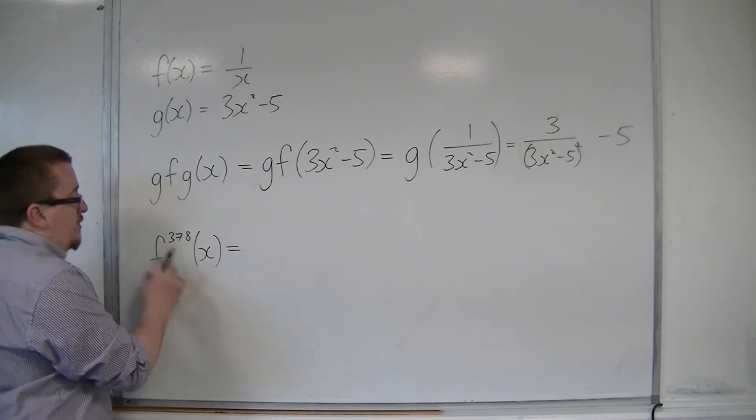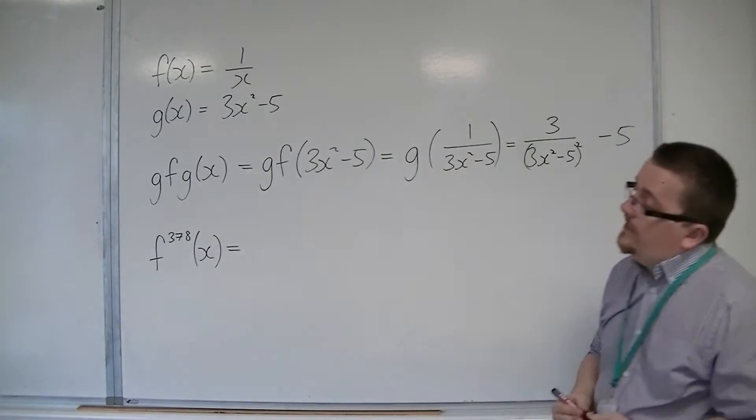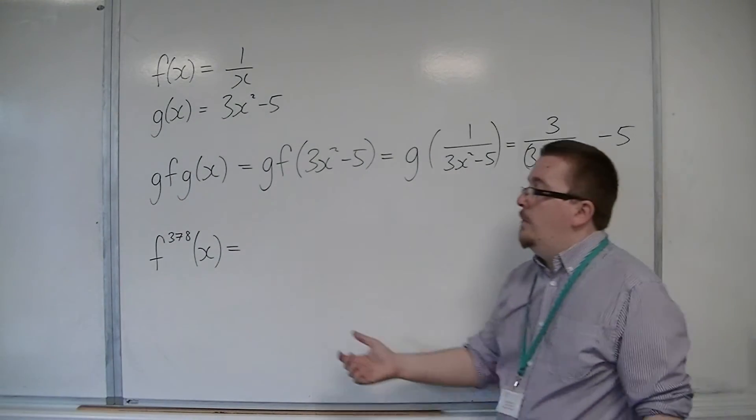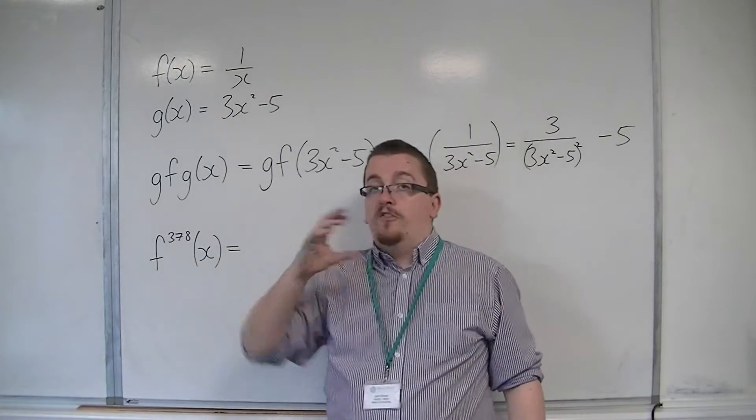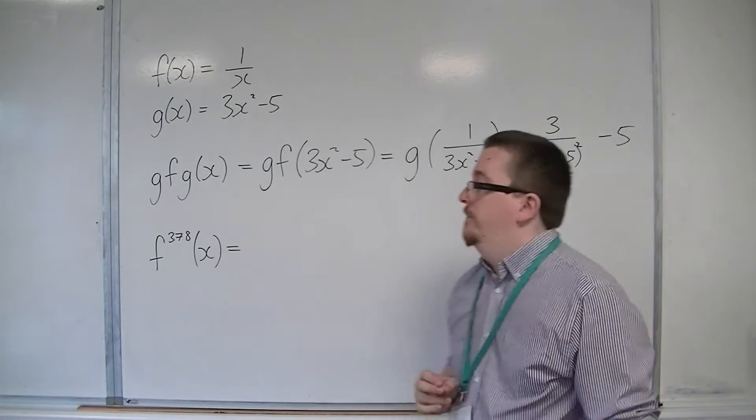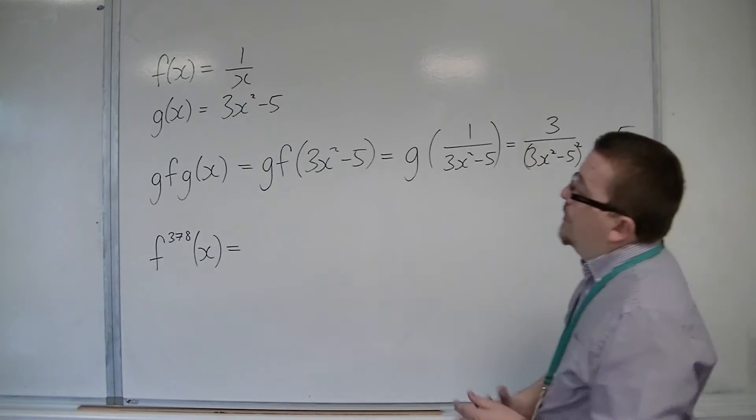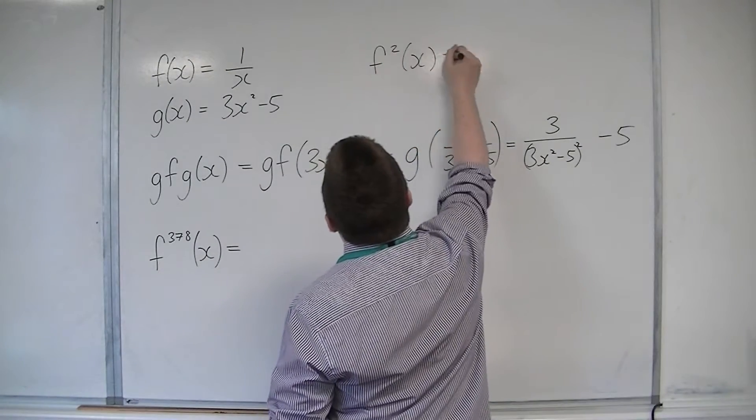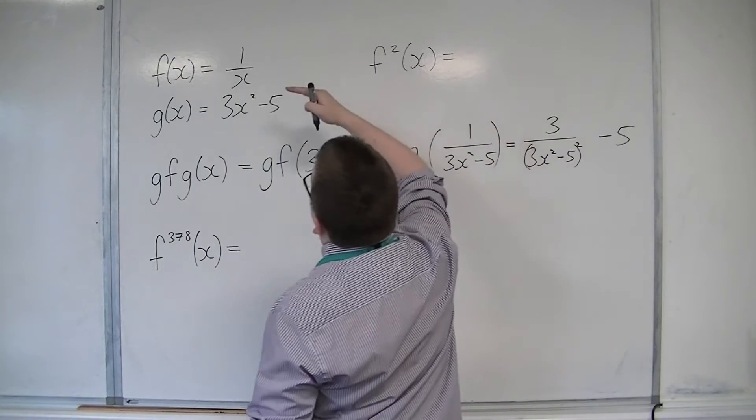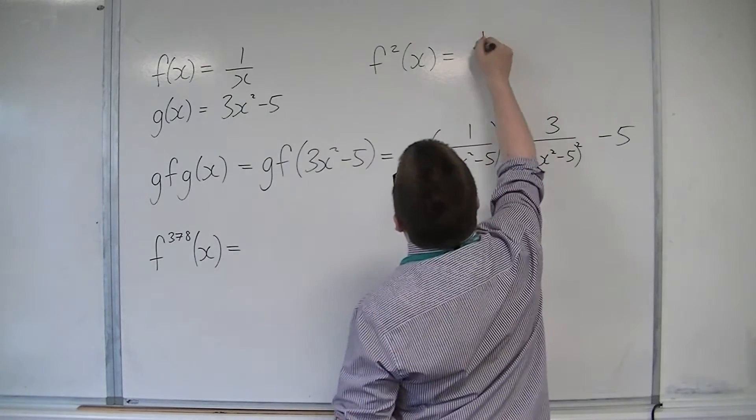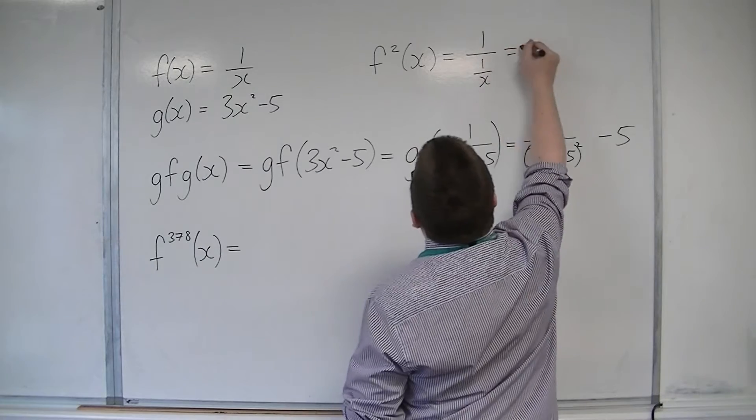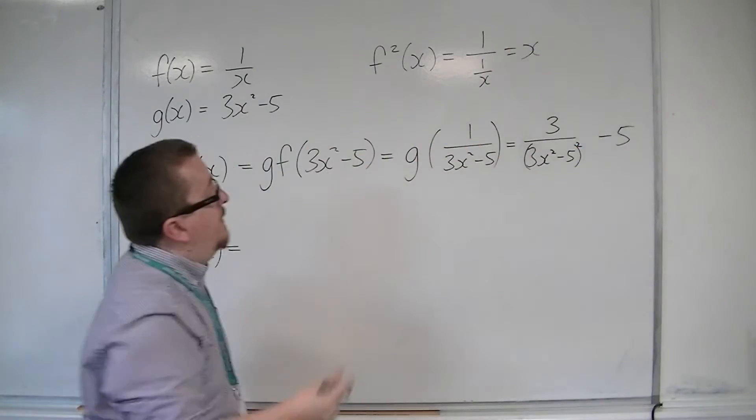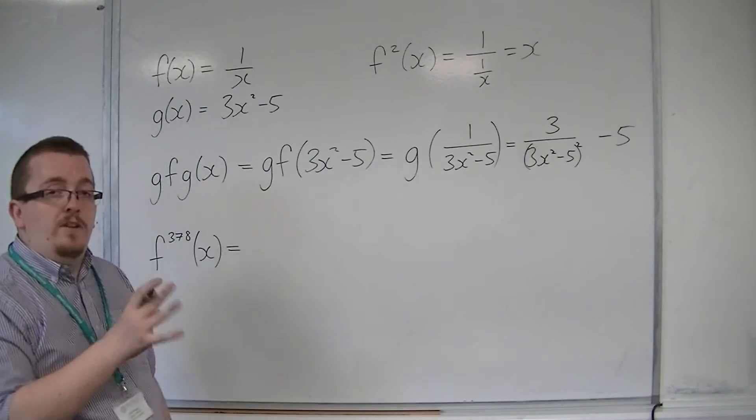If I'm then going to look at f to the 378 of x, I've just come up with that number out of the blue, but I've made sure that the number is even. Because if I look at f squared of x, then this is 1 over x, or 1 over 1 over x, which is the same as x. So that means that f is its own inverse.